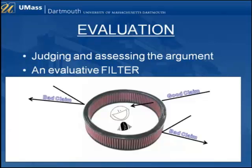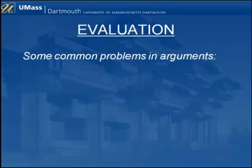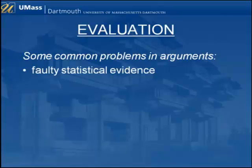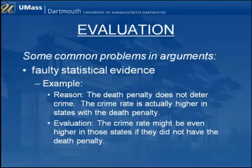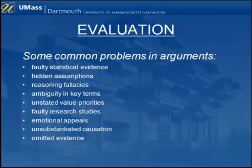In a college course on critical thinking, most of the time is spent identifying problems that tend to turn up over and over again in the arguments people make. One very common problem is faulty statistical evidence. Let's look at our capital punishment example again. The writer asserted the death penalty was not a deterrent to crime, and based that assertion on statistics showing that the crime rate was higher in states that use the death penalty. If we evaluate this reason carefully, we might point out that this statistic doesn't really show a lack of deterrent effect — it may very well be the case that the crime rate in those states would be much higher if they didn't use capital punishment. Becoming a good critical thinker means developing skills in identifying these common problems in people's arguments.